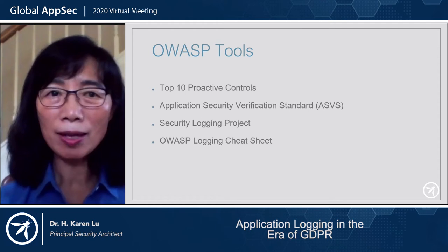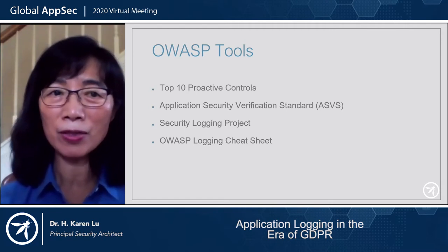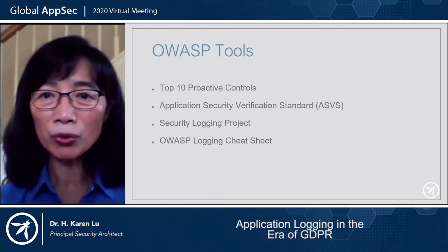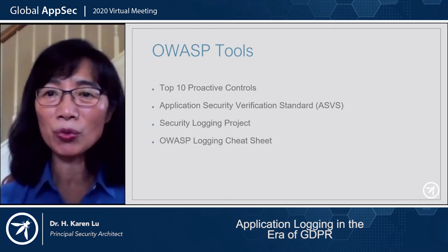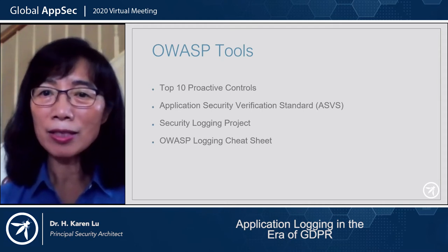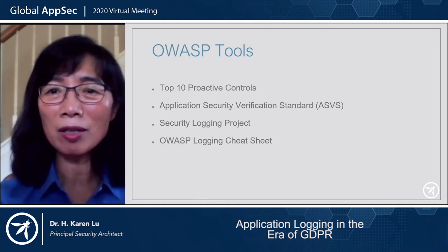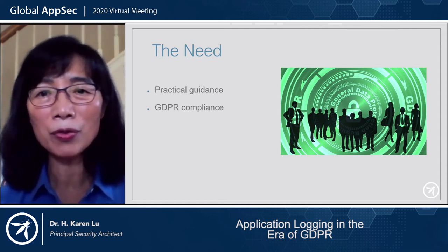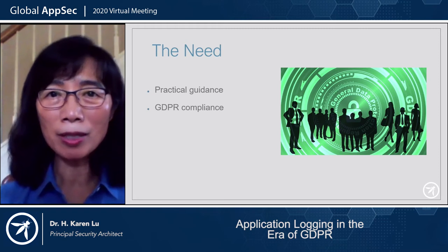There are resources available such as OWASP's top 10 proactive controls, application security verification standards (ASVS), security logging projects, and the OWASP logging cheat sheet. There are also other open source tools, commercial logging tools, and cloud provider tools. Developers and operations use these tools to enhance the performance and security posture of their products and services.